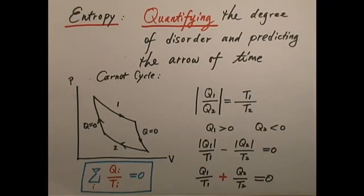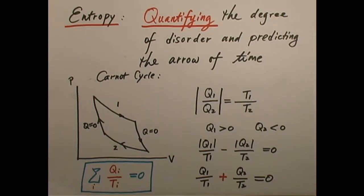We have so far introduced the second law of thermodynamics, which in particular tells us the greatest possible efficiency of a heat engine operating between two temperatures, Th and Tc. But that doesn't solve the problem that we started out with — what makes certain processes reversible and what makes certain processes irreversible? In other words, how do you figure out the direction of the arrow of time, or in particular the thermodynamic arrow of time?